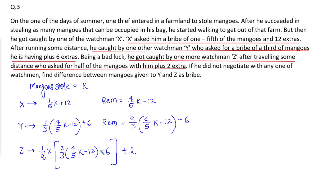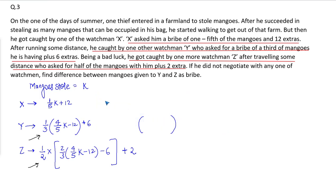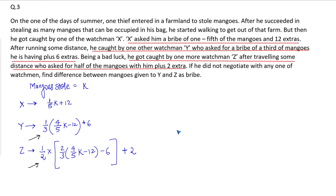What we need to find is the difference between mangoes received by watchman Y and watchman Z. So the number of mangoes received by watchman Y is: one-third of (4/5 k minus 12) plus 6, which simplifies to 4k divided by 15 minus 4 plus 6, equal to 4k divided by 15 plus 2.